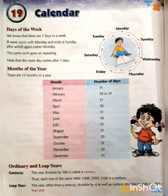Months of the year — we know that there are 12 months in a year. The first month of the year is January, which has 31 days. February has 28 days or 29 days. A year that has 28 days in February is called an ordinary year, and when February has 29 days, that year is known as a leap year.